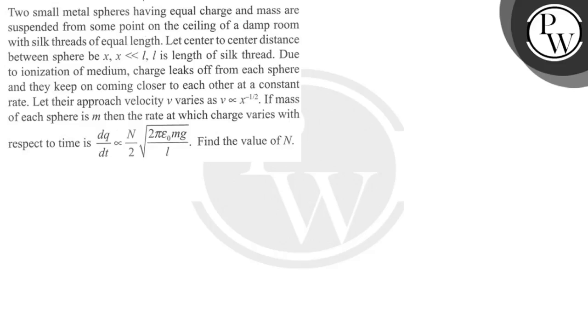Hello, let's see this question. Two small metal spheres having equal charge and mass are suspended from some point on the ceiling of a damp room with silk threads of equal length. Let center-to-center distance between spheres be x, where x is far less than L. L is the length of silk thread. Due to ionization of medium, charge leaks off from each sphere and they keep on coming closer to each other at a constant rate.